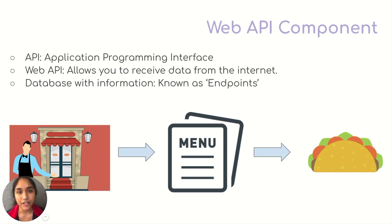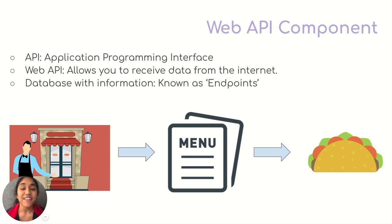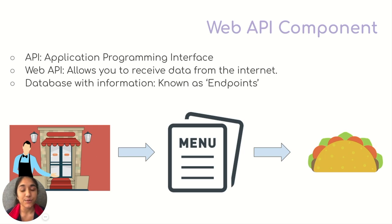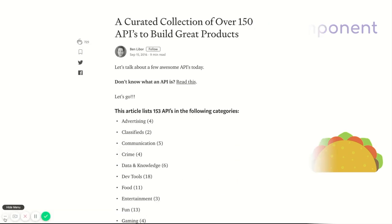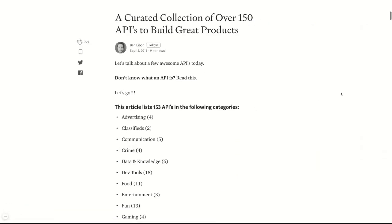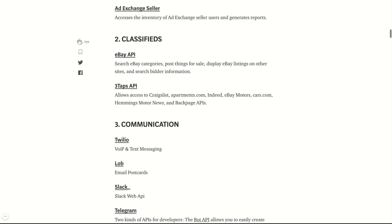A good way to think about the web API component is to imagine yourself going to a restaurant. Once you're there you'll get a menu card and you can choose any food item from it. That's exactly how the web API component works — you can go onto a database, look through their information, and choose the information that you want. In the description box below we've included a list of APIs you can take a look at, including sources like YouTube, Yelp, and The Weather.